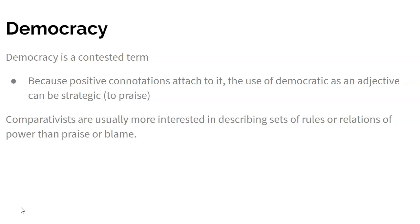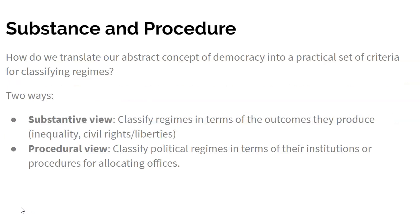There might be non-democracies that are fairly decent regimes and there may be democracies that are quite tyrannical. Comparativists are usually more interested in describing sets of rules or relations of power than attributing praise or blame, so they tend to have more technical definitions than the average person on the street. Philosophers tend to have less technical and more idealistic or aspirational definitions of democracy, to the point where some philosophers have definitions of democracies that we can't find anywhere in the world — no democracy can or perhaps even could meet those lofty standards.